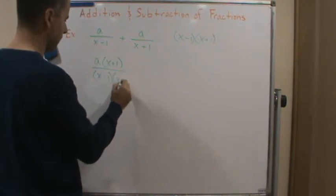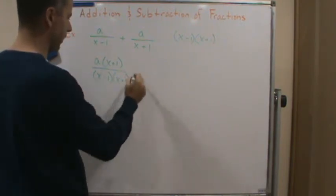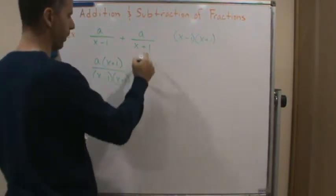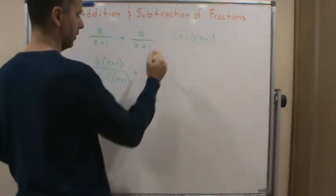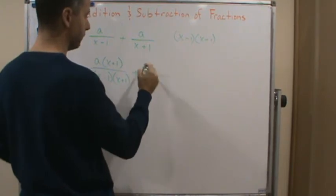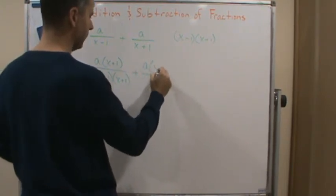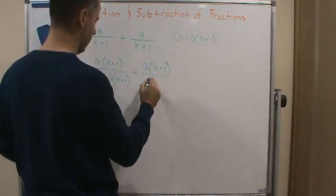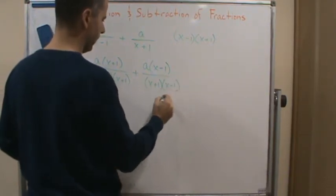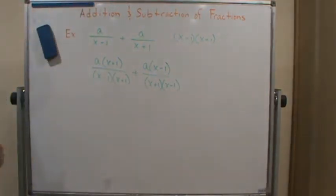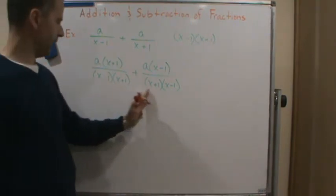And then plus, here we're missing the x minus 1, so we're going to multiply the top and bottom by x minus 1. So we get a times x minus 1 over x plus 1 times x minus 1. So now we have a common denominator.